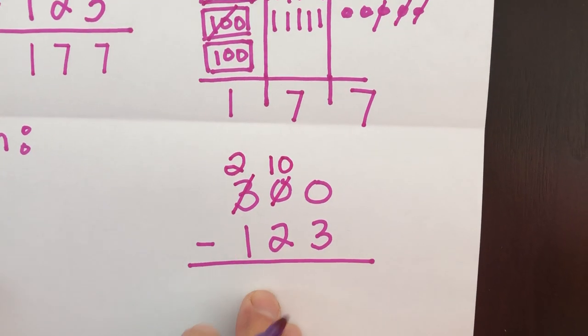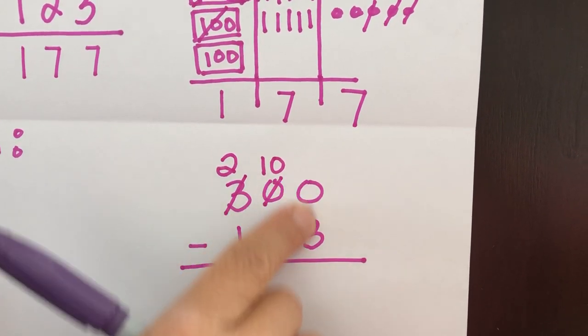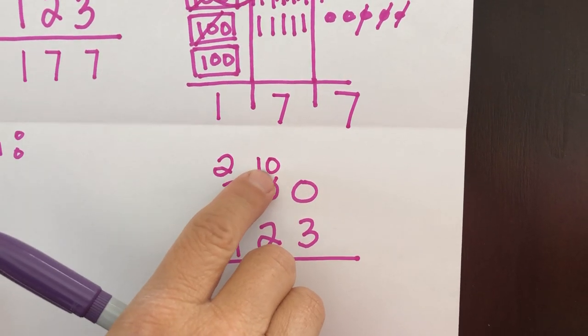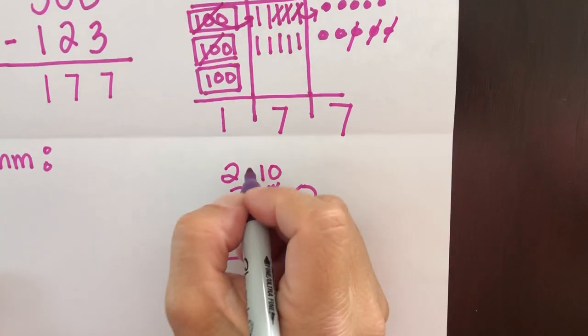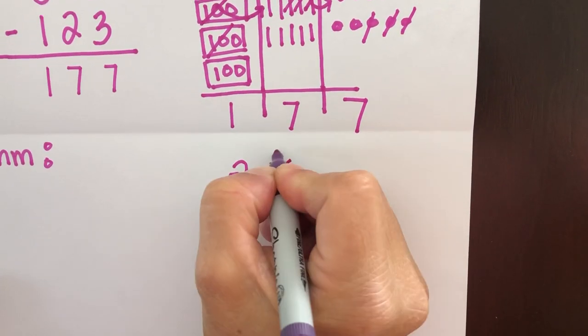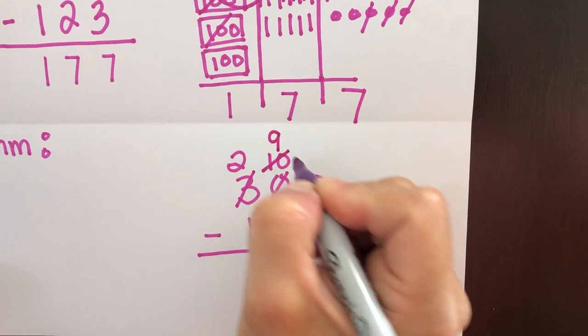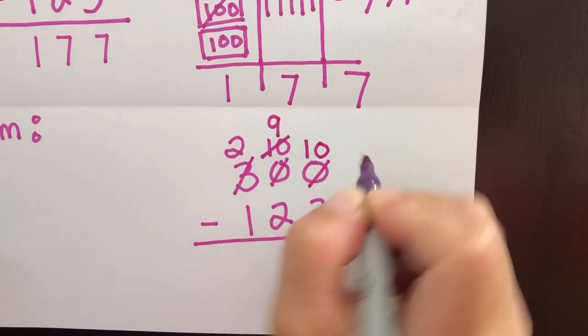But I still need to, I still can't subtract here. So I have to regroup again from this 10 so that I can give this place value some value. So I'm going to borrow one 10. So I'm going to cross the 10 off again and turn it into a nine, and bring the one that I borrowed over here, and make this a 10.